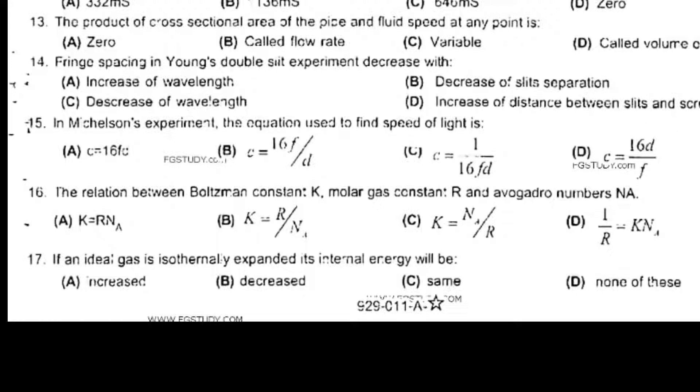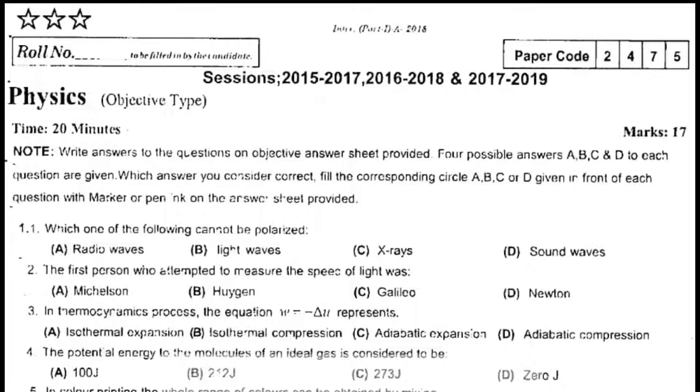The product of cross-sectional area of the pipe and fluid speed at any point is variable. Fringe spacing in Young's double slit experiment decreases with decrease of wavelength. In Michelson experiment the equation used to find speed of light is c = 16fd. The relation between Boltzmann constant k, molar gas constant R, and Avogadro number NA: k = R/NA. If an ideal gas is isothermally expanded, its internal energy will be same. Which one of the following cannot be polarized? Sound waves. The first person who attempted to measure the speed of light was Galileo.